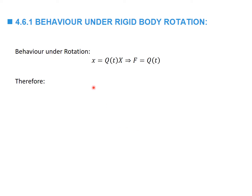Let's investigate the behavior of L under pure rotation. Assuming the spatial position is equal to the rotation matrix Q as a function of t multiplied by X, then the deformation gradient F is equal to Q as a function of t. The velocity gradient, which is equal to Ḟ F⁻¹, gives Ḟ equal to Q̇ and F⁻¹ equal to Qᵀ — simply because for a rotation matrix, its inverse equals its transpose.